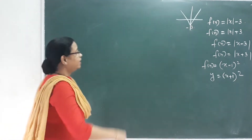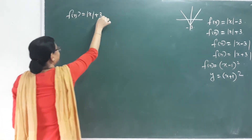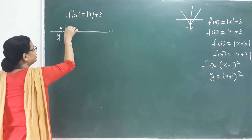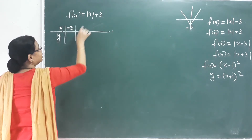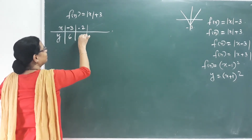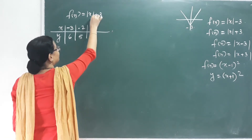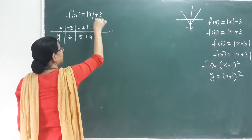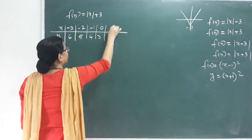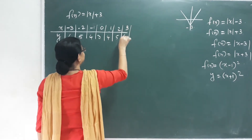Next question: f of x is equal to mod x plus 3. This graph has values — the value is the function. Negative 3 is positive, negative 2 is 5, negative 1 is 4, here is 0 giving 3, now 1 gives 4, 2 gives 5, 3 gives 6.